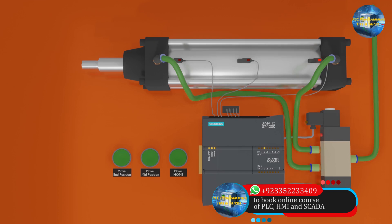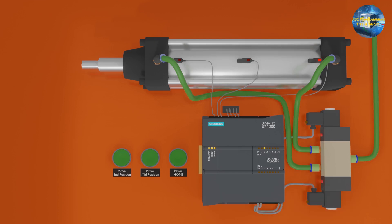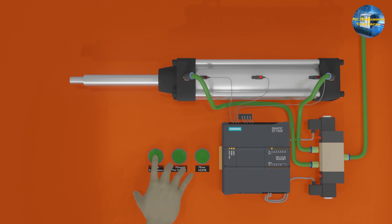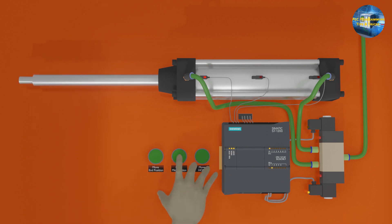Welcome to another training session of the TR portal. In today's session we will learn how we can program a PLC in ladder logic to control the pneumatic cylinder using the 5 by 3 way solenoid valve. We will see how we can make the logic to stop the cylinder at 3 different positions: fully retracted or home position, mid position, and fully extended or end position.